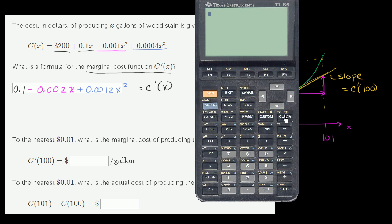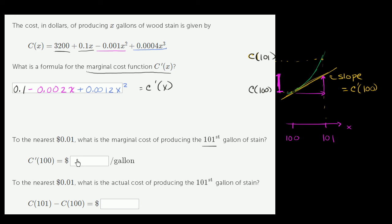So c prime of 100 = 0.1 − 0.002 × 100 + 0.0012 × 100² = 0.1 − 0.2 + 0.0012 × 10,000. That comes out to 11.90. So the marginal cost approximation is $11.90 per gallon.